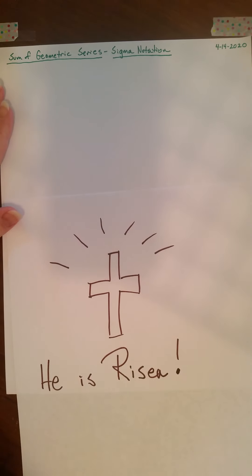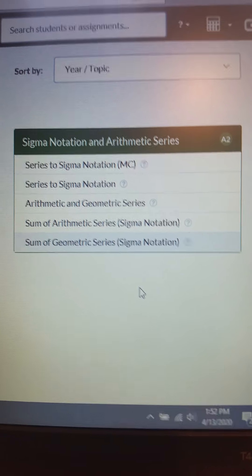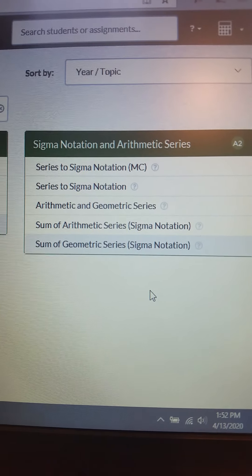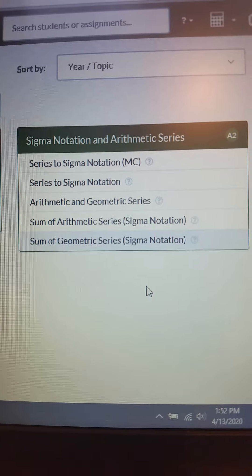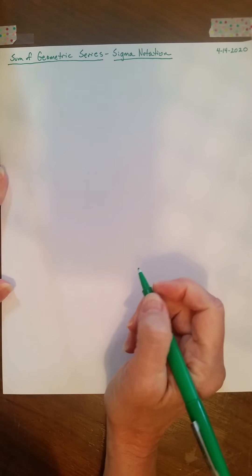So this lesson is for Tuesday, April 14th, and we're going to look at some geometric series using sigma notation. Now let me show you what this looks like on delta math. Okay, there it is right there. We're going to do the fifth one down, sum of geometric series using sigma notation. We've already done the sum of arithmetic series using sigma notation. Now we're going to do geometric series using sigma notation. So here we go. Take out your math notebook. Let's just get this started, and go ahead and write that down.